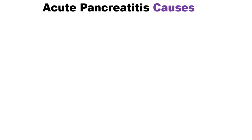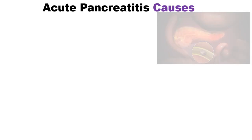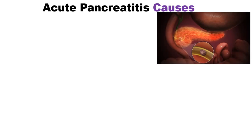In this video we will discuss the mnemonic for the causes of acute pancreatitis. Acute pancreatitis is the inflammation of the pancreas, and its mnemonic is GET SMASHED.